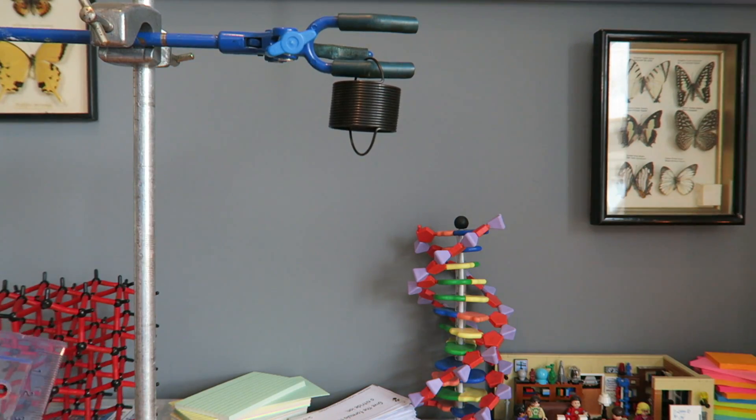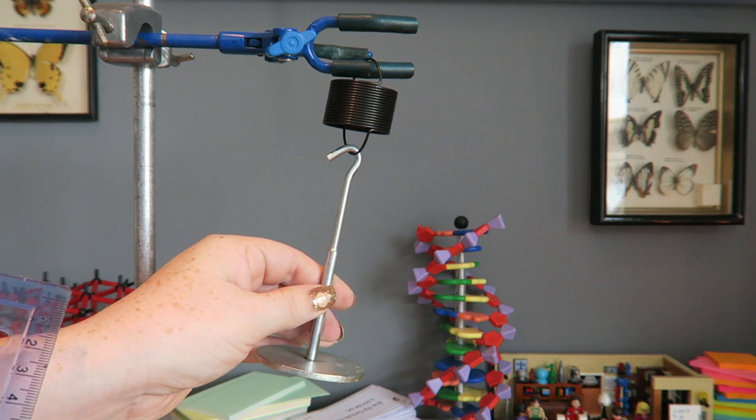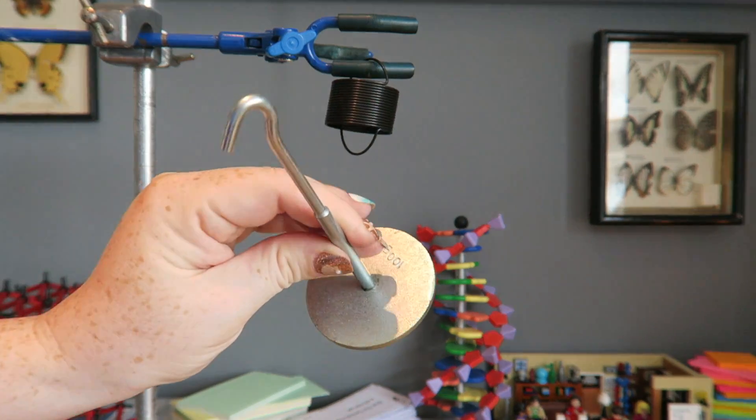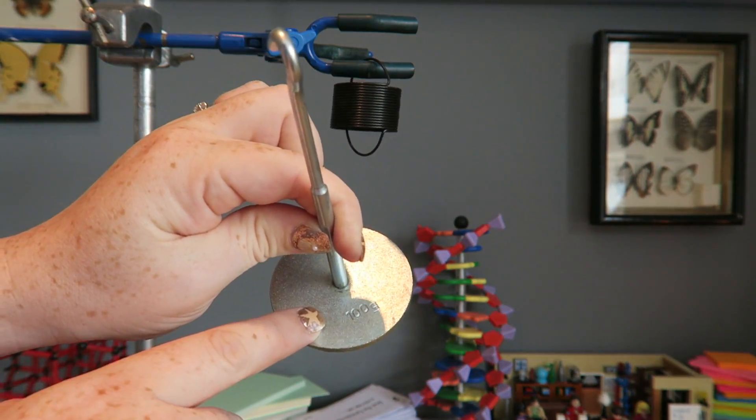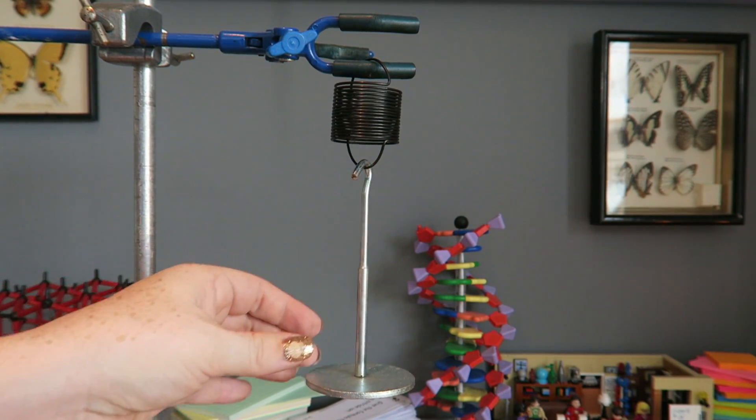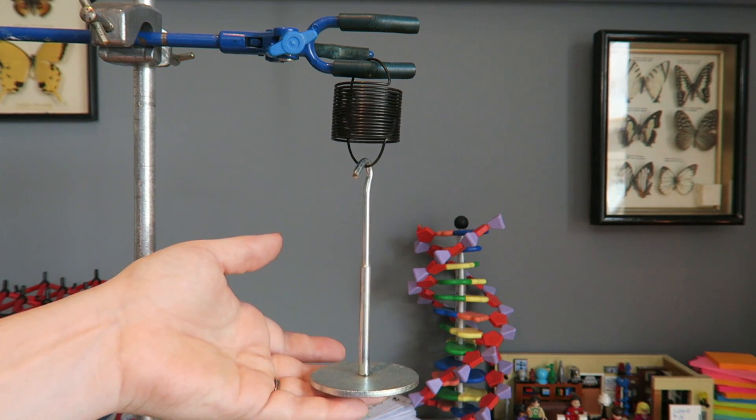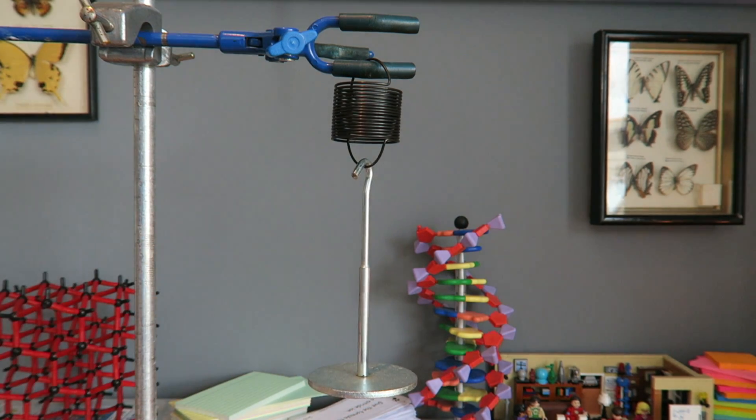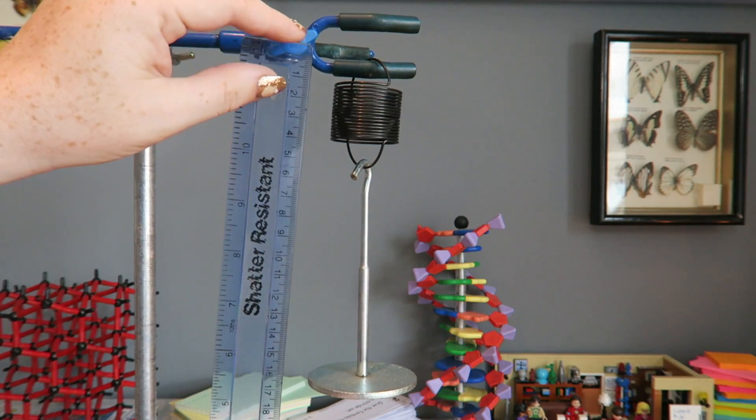Once you've measured the length of the first part of the spring you can attach your weight. You'll notice that your weight is already 100 grams with this bit on the bottom. Attach it gently, wait until the spring has stopped springing, and then measure the length of the spring again.